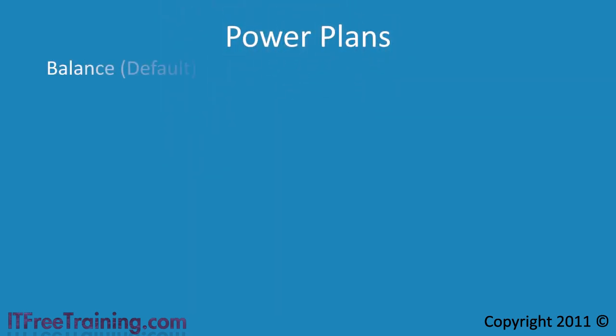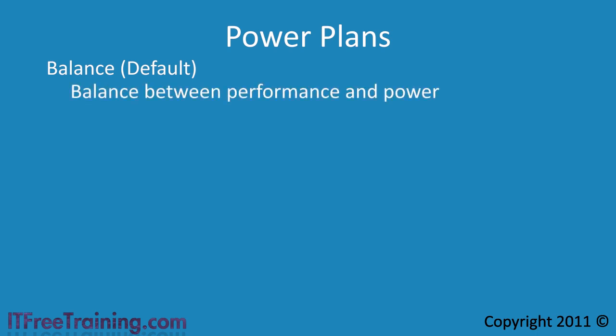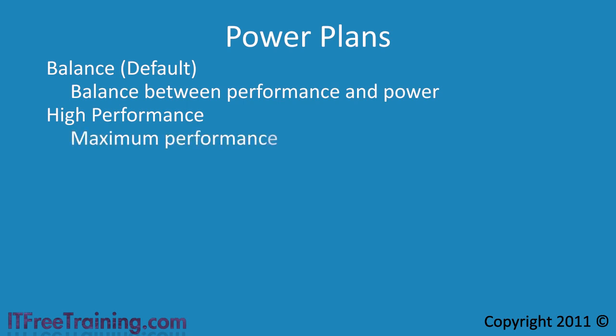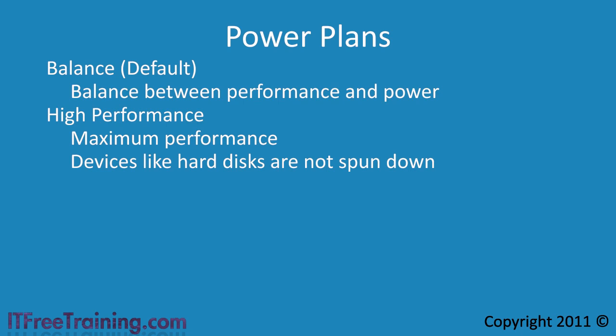The default plan is balanced, which is a balance between performance and power saving. The next power plan is high performance. When in this mode, performance is maximized, meaning devices such as the hard disk are not spun down. This maximizes the speed of your computer and its responsiveness. However, it also means that power consumption is higher. On a laptop, this will reduce the amount of time that the laptop can run off batteries.